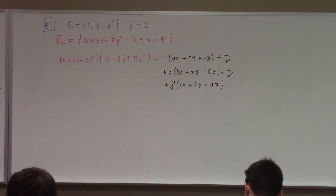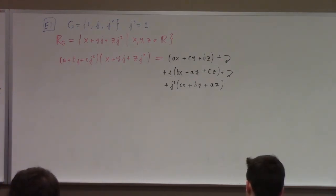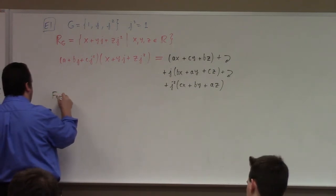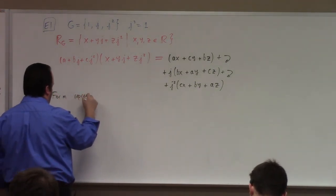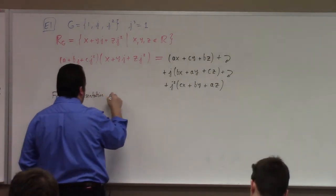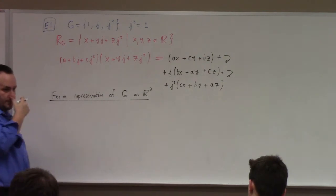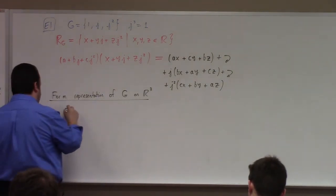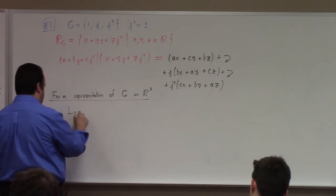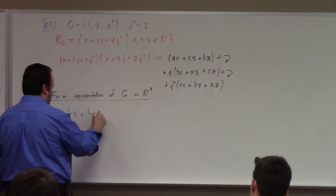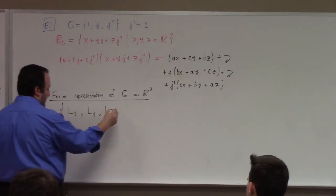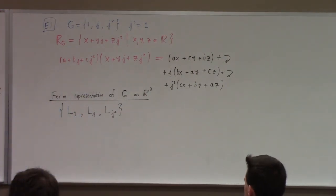You can prove that that's associative and has the right distributivity properties. It's commutative because the underlying group is commutative. Then we can form a representation of G on R3 in a natural way — we can look at left multiplication by 1, left multiplication by J, or left multiplication by J squared. My claim is that this is in fact a faithful representation of G on R3.